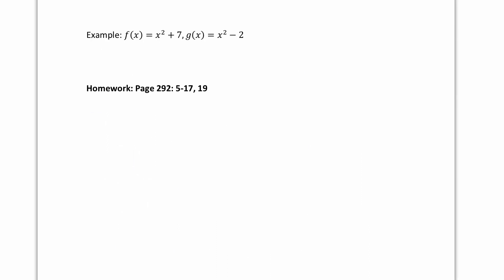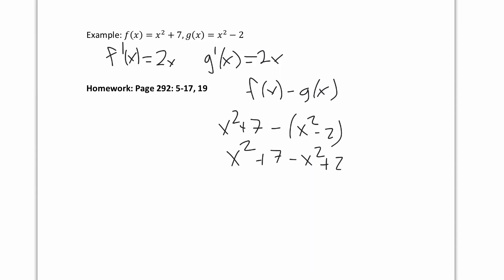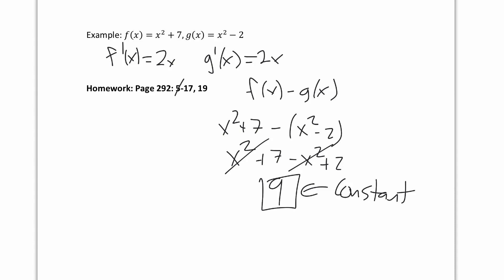Let's do a quick example. Consider f(x) equals x squared plus 7 and g(x) equals x squared minus 2. The derivative of f is 2x and the derivative of g is also 2x — they have the same derivative. If we subtract the two functions, f(x) minus g(x) equals x squared plus 7 minus x squared plus 2, and the x squared terms cancel, giving us 9, which is constant. Indeed, we get a constant function when we subtract. For homework, do problems 11 to 17 and then 19.